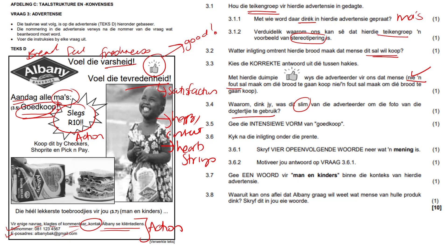It's a good technique to manipulate people to buy the product, because you think: because the little girl is happy, my children will probably be happy too. So it makes you think you are going to be just as happy as the little girl. Gee die intensiewe vorm van goedkoop — dit is spotgoedkoop. So when something is very cheap, that's the word you use.